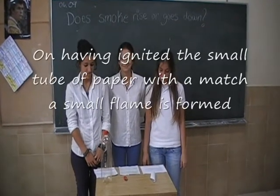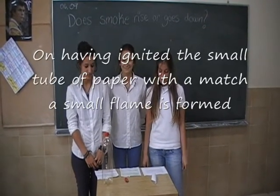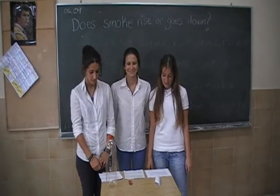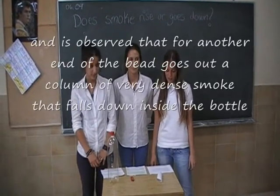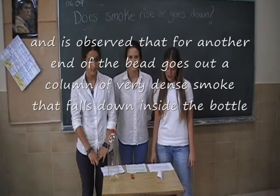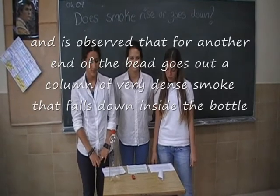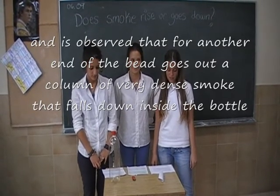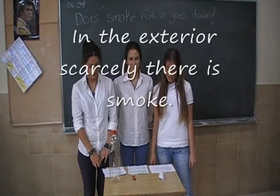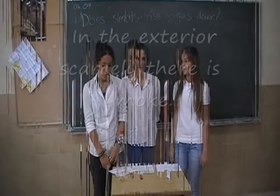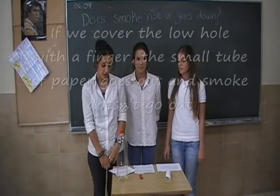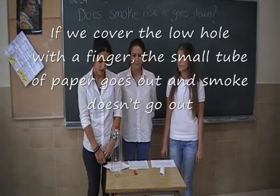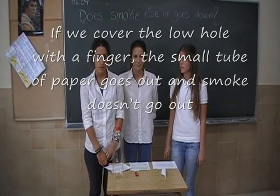On lighting it, the small tube of paper with a match, a small flame is formed. From the other end at the base, a column of very dense smoke comes out and falls down inside the bottle. In the surrounding area there is scarcely any smoke. If we cover the lower hole with a finger, the smoke from the small tube does not come out.